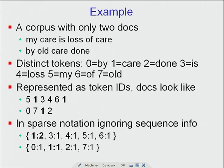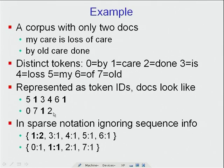Let's take a concrete example. Suppose our corpus has two documents: "my care is loss of care" and "by old care done". There are eight distinct words — by, care, done, is, loss, my, of, org — sorted and assigned integer IDs 0 through 7. A search engine immediately represents documents as sequences of token IDs. Document D1 becomes 5, 1, 3, 4, 6, 1 and D2 becomes 0, 7, 1, 2. Looking up the table recovers the original documents.